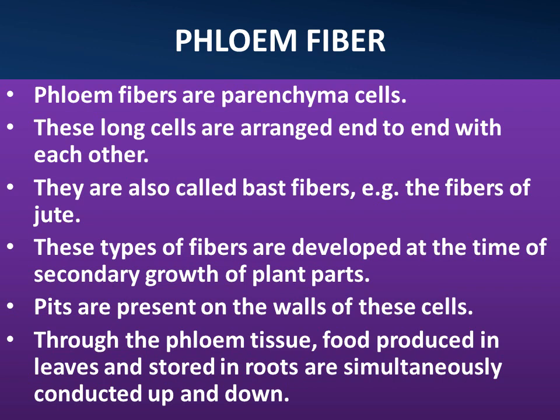Phloem fiber: phloem fibers are long cells arranged end to end with each other. They are also called bast fibers — for example, the fibers of jute. These types of fibers are developed at the time of secondary growth of plant parts. Pits are present on the walls of these cells. Through the phloem tissue, food produced in leaves and stored in roots are simultaneously conducted up and down.